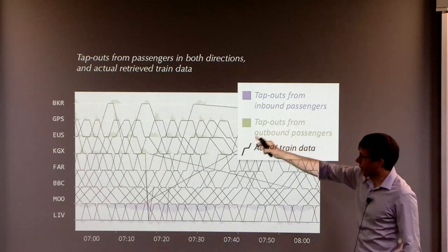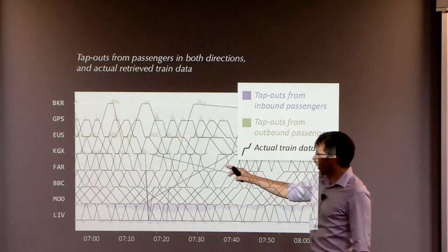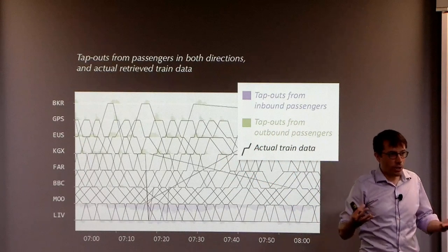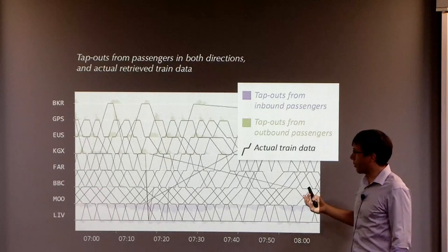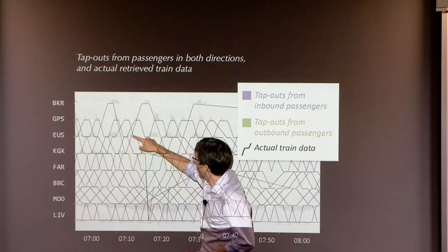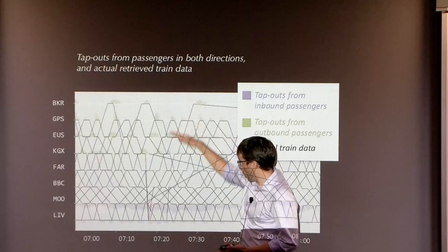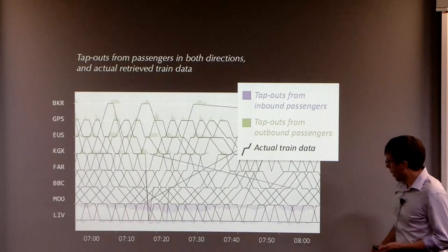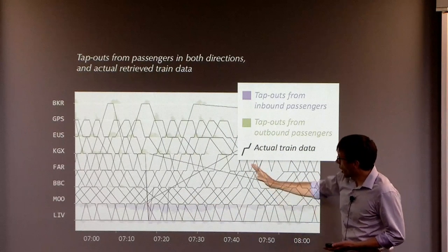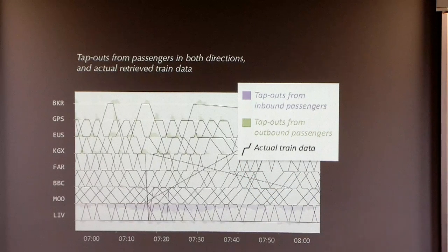When we did that, this is the picture that we got. So here we actually received the recordings from the signaling software of when the trains arrived at each station. I've drawn, so these diagonal lines going up represent a train on the outbound direction. This represents a train on the inbound direction along this line. The official timings mostly match the clusters of tap outs, but not entirely. There are some just plain glitches in the data.